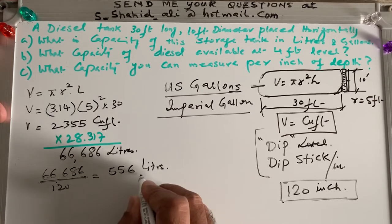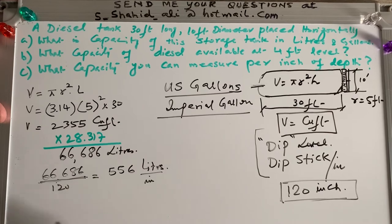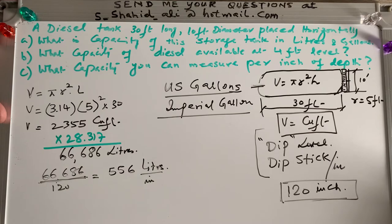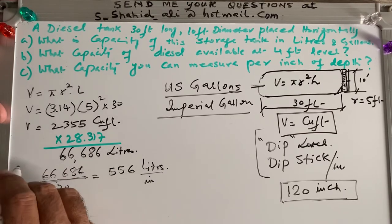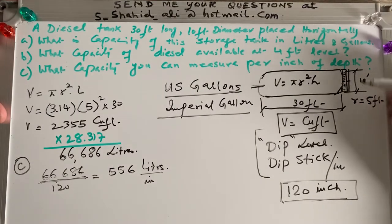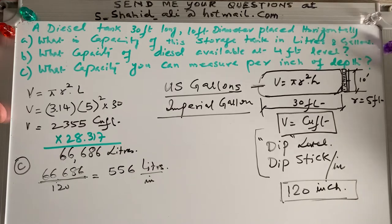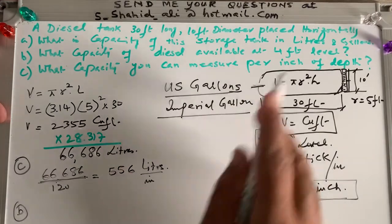So this is my liters per inch. This is kind of my dipstick measurement. Every inch of this tank is holding 556 liters every inch. So now this is our C part, because now I make a dipstick. And I know that what my values are in terms of liters per inch of this tank.